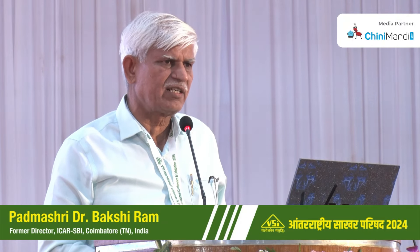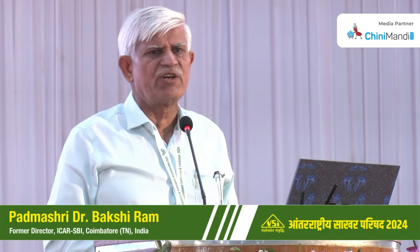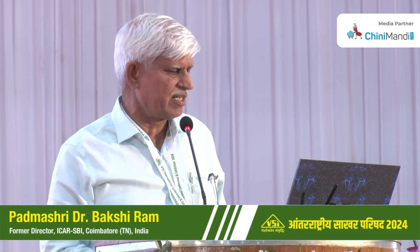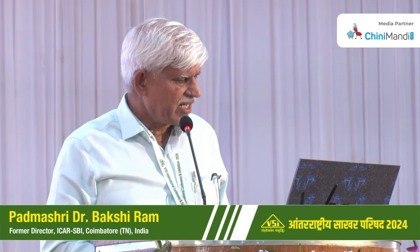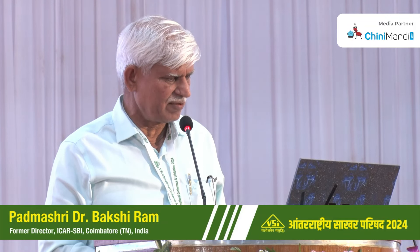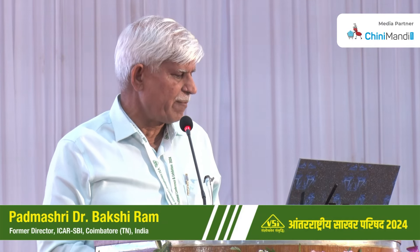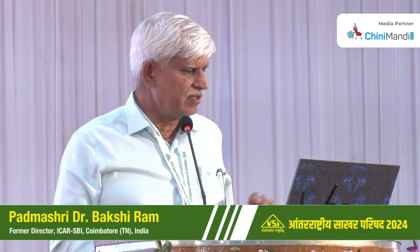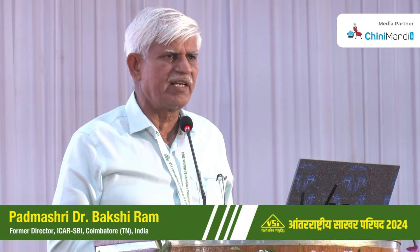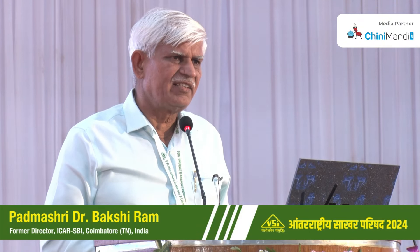In 2022-23, in the sub-tropical region, CO0238 continued to be the leading variety with 72.49% area. During the current season, area has gone down — it is still occupying 59.9% of the total sugarcane area in five sub-tropical states: Haryana, Punjab, Uttarakhand, UP, and Bihar. CO0118 is at 10.69%, increasing to 16% currently. The contribution of Karnal varieties in the sub-tropical area is approximately 85%.